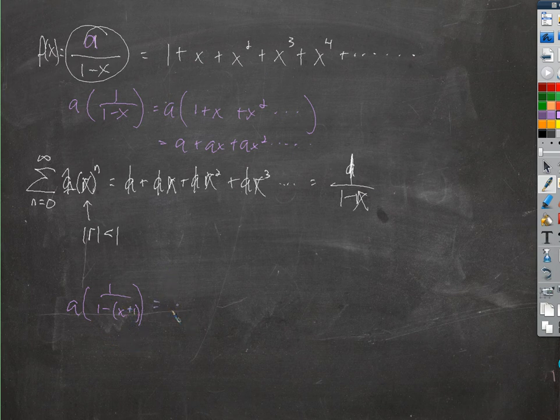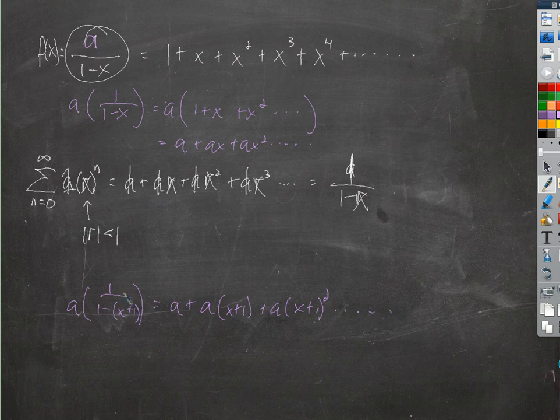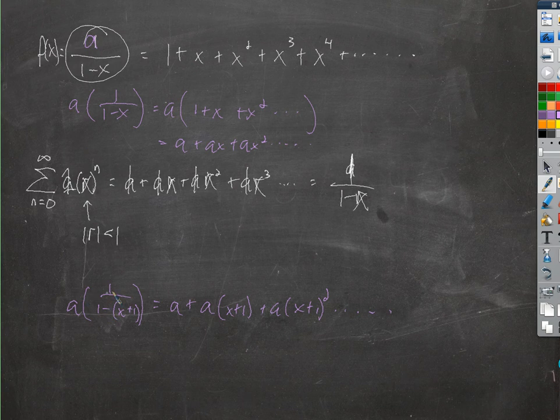So this would be equal to a, plus a times x plus 1, plus a times x plus 1 squared, and so on and so on. And then we could change this to a 2x, we could change this to an x squared. If we can write our function that's given somehow like this, then we have a power series that equals this function.